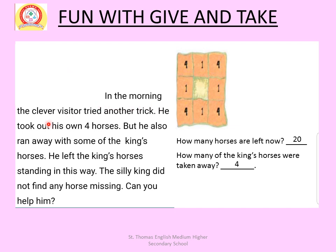In the morning the clever visitor tried another trick. He took out his own four horses but also ran away with some of the king's horses. He left the remaining horses arranged so that from all sides the count was still 9, using the pattern 4 plus 1 plus 4 on each side. The silly king did not find any horse missing.